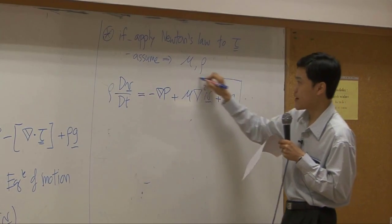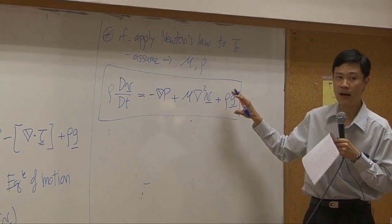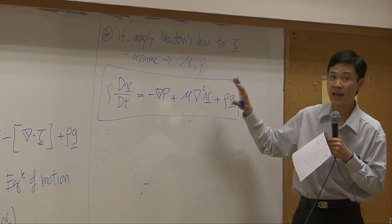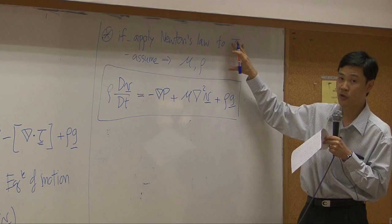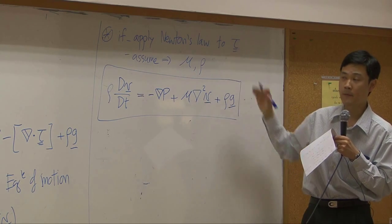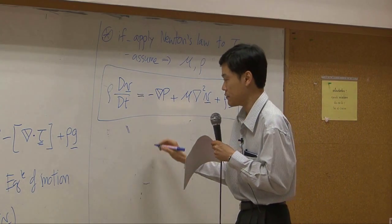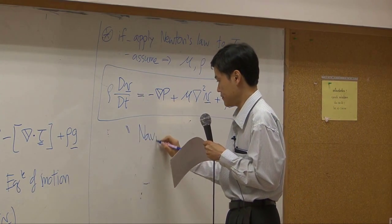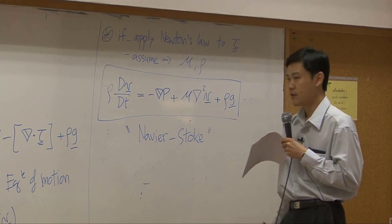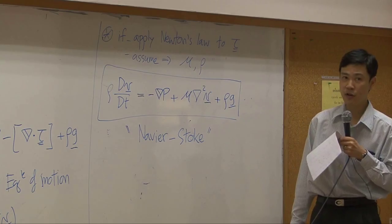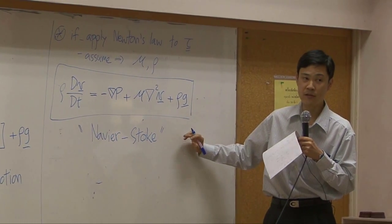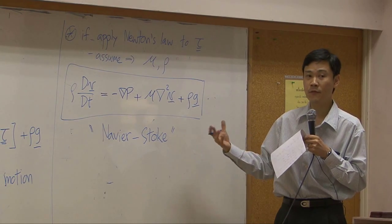This equation is a simplified version of equation of motion. This equation can be used only when these two assumptions can be applied. This equation has a name as well. It is called Navier-Stokes equation. It is a very famous equation for fluid flow.